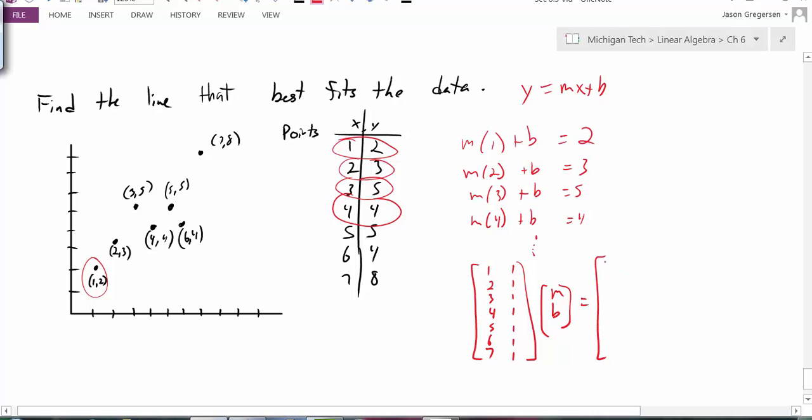And this equals the right hand side, which in this case is all my y values, 2, 3, 5, 4, 5, 4, 8.